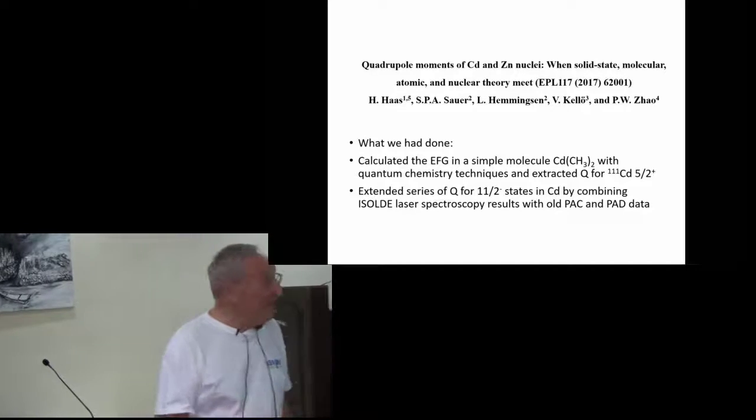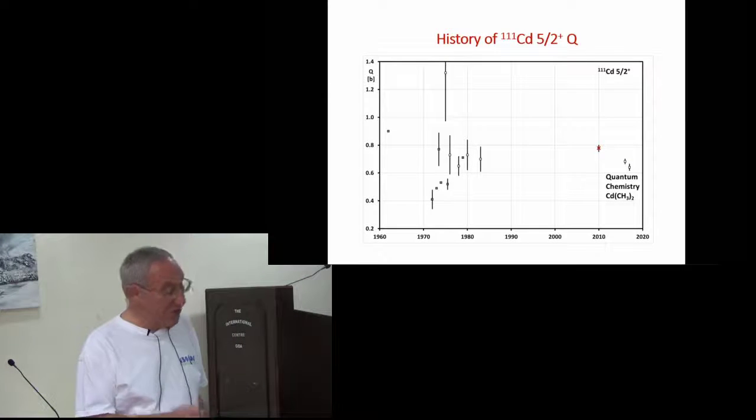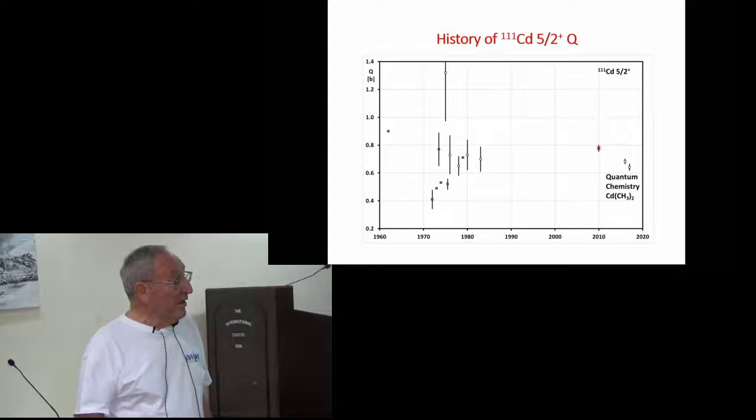So from that, we did get from quantum chemistry then an experiment, a number that we trusted even better for the 111 cadmium state.